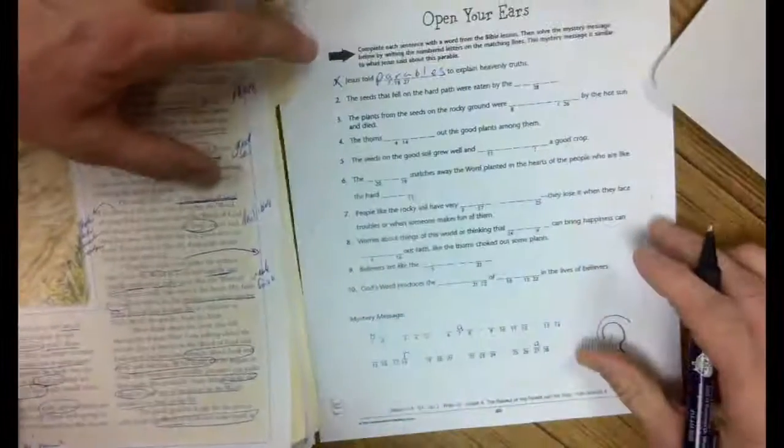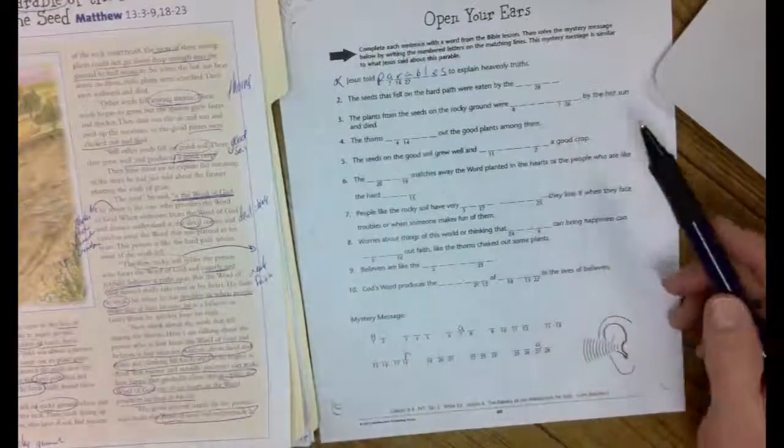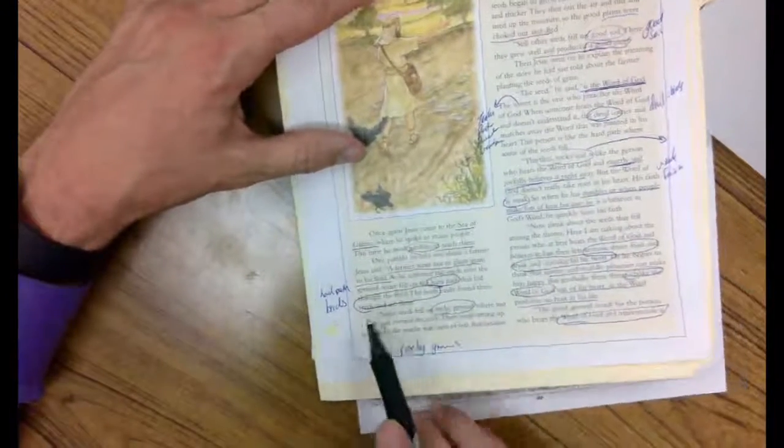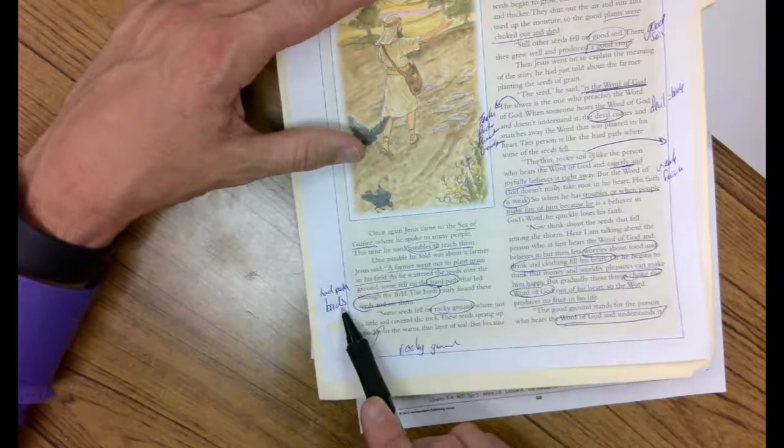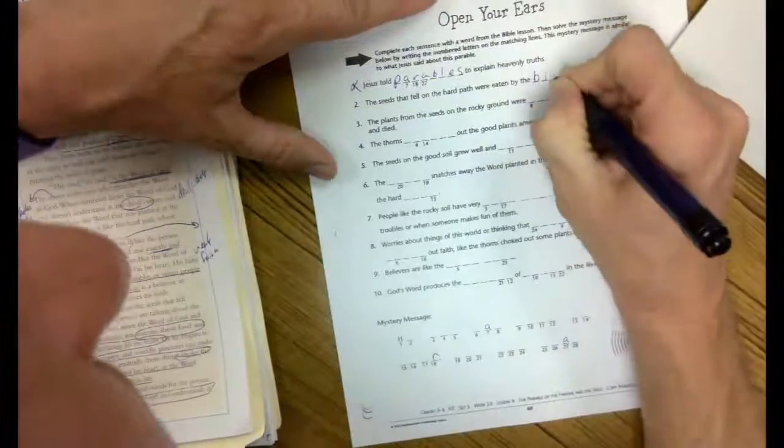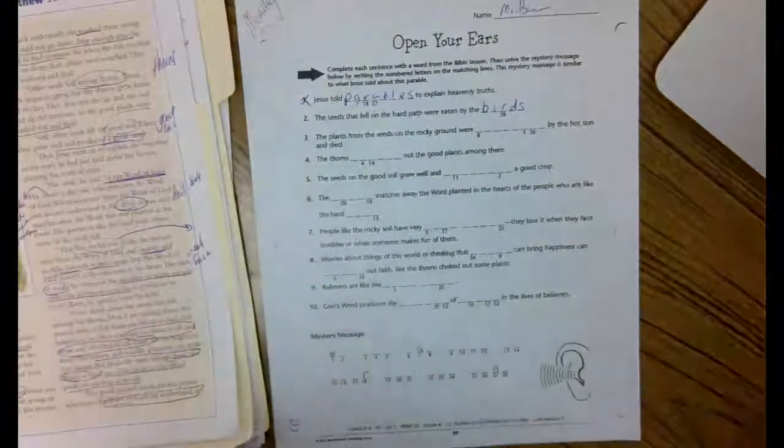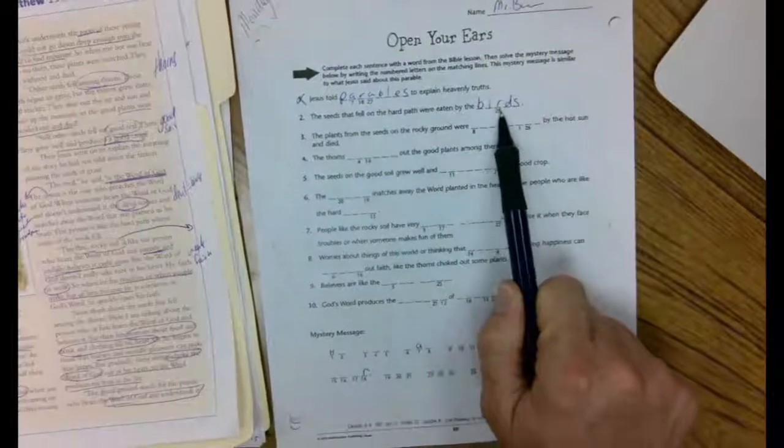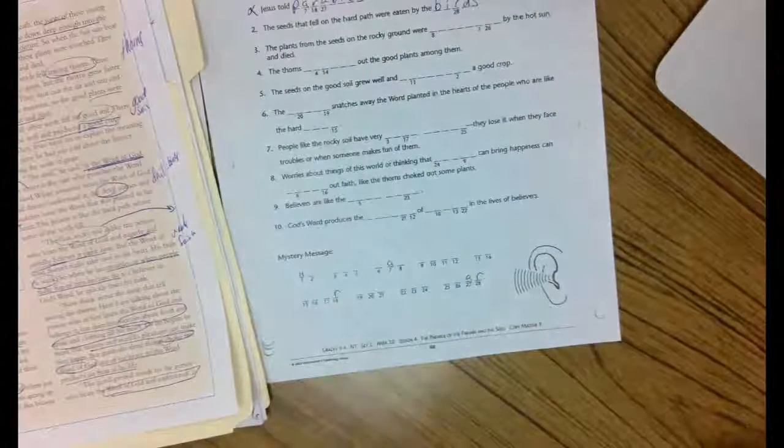Number two. The seeds that fell on the hard path were eaten by the seeds and the hard path. Read in order in our lesson, most of the answers come. Oh, I already wrote it on the side. Yeah, they were eaten by the birds. Birds. So if you did a good job taking notes, this assignment's pretty easy. All right, only one of those has a number underneath, and it's the R. Number 28 is R.